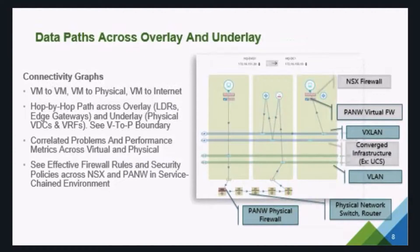Another big feature of VRNI that customers really love is the data flow view — the actual data path across overlay and underlay. It shows VM-to-VM traffic and VM-to-physical traffic. VRNI also integrates with third-party vendors; for example, if you have Palo Alto Networks for next-gen firewall, it will show that in the service chaining view.